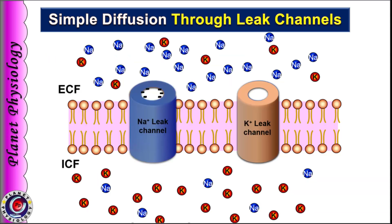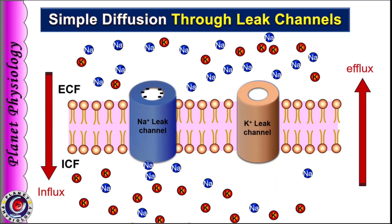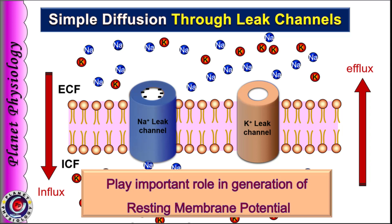In the animation, sodium concentration is higher in the extracellular fluid, so sodium passes through sodium leak channels and enters the cell — inward movement is called influx, so this is sodium influx. Potassium leak channels, due to their smaller diameter, allow only potassium ions to pass. Potassium ions leave the cell along their concentration gradient through potassium leak channels — outward movement is called efflux. Normally, the cell has more potassium leak channels than sodium leak channels, so membrane permeability is greater for potassium at rest. These leak channels play an important role in the generation of resting membrane potential.